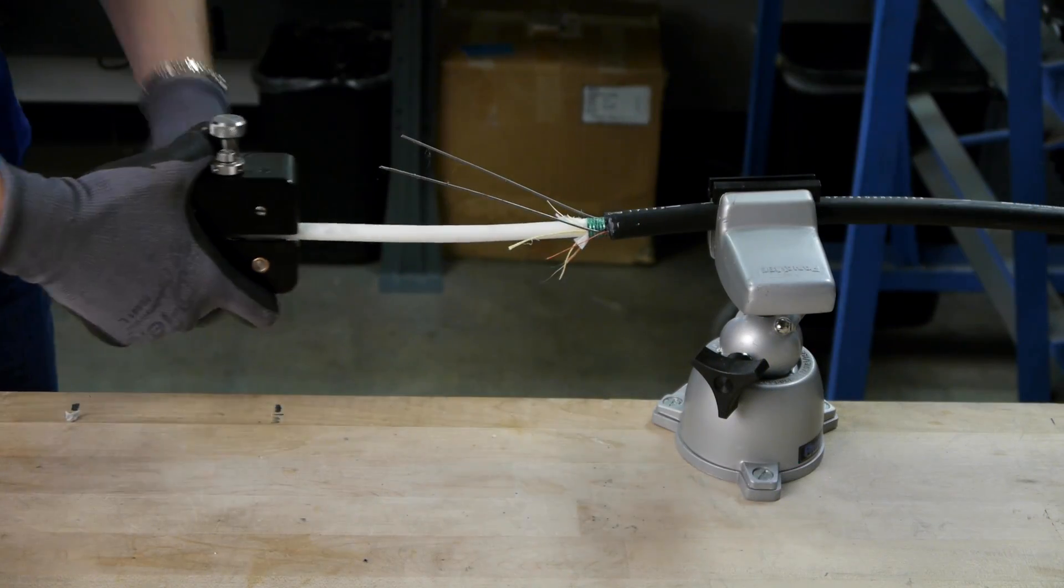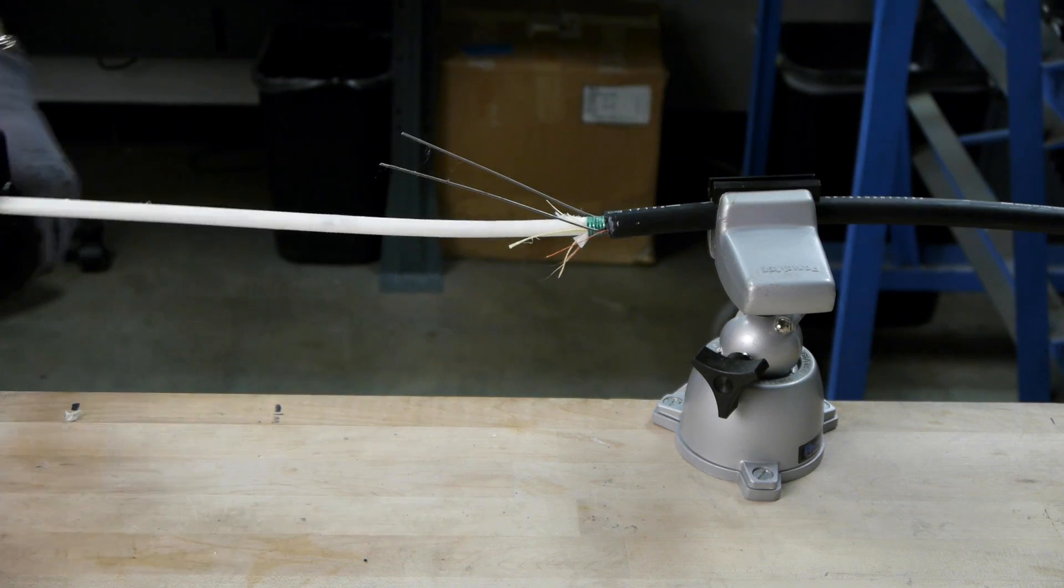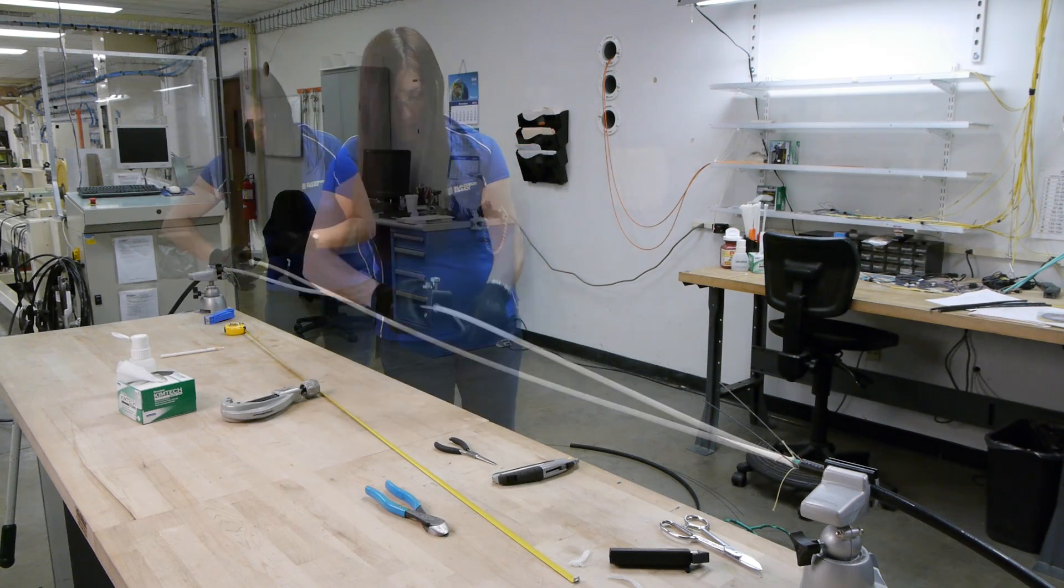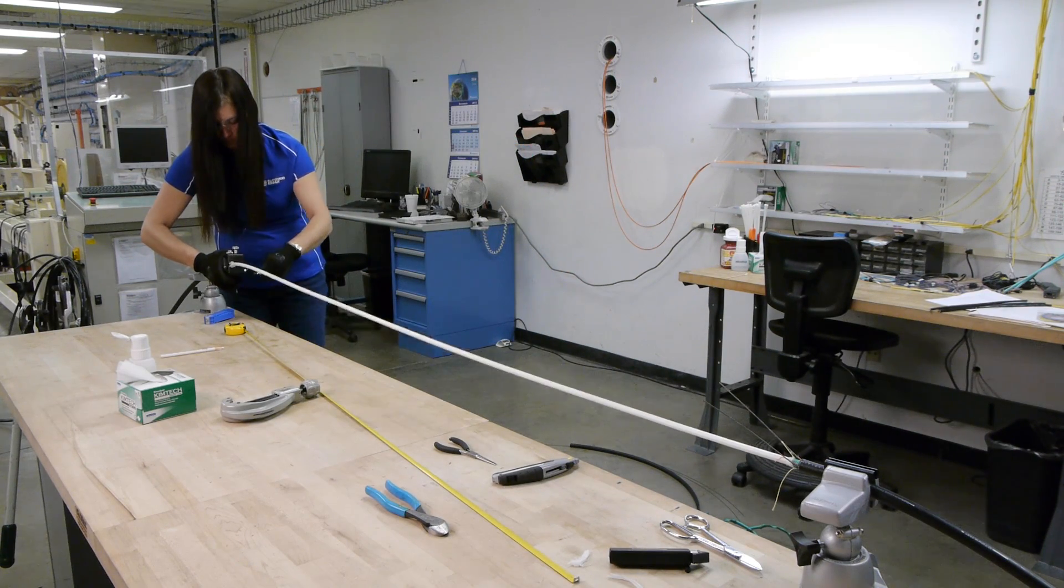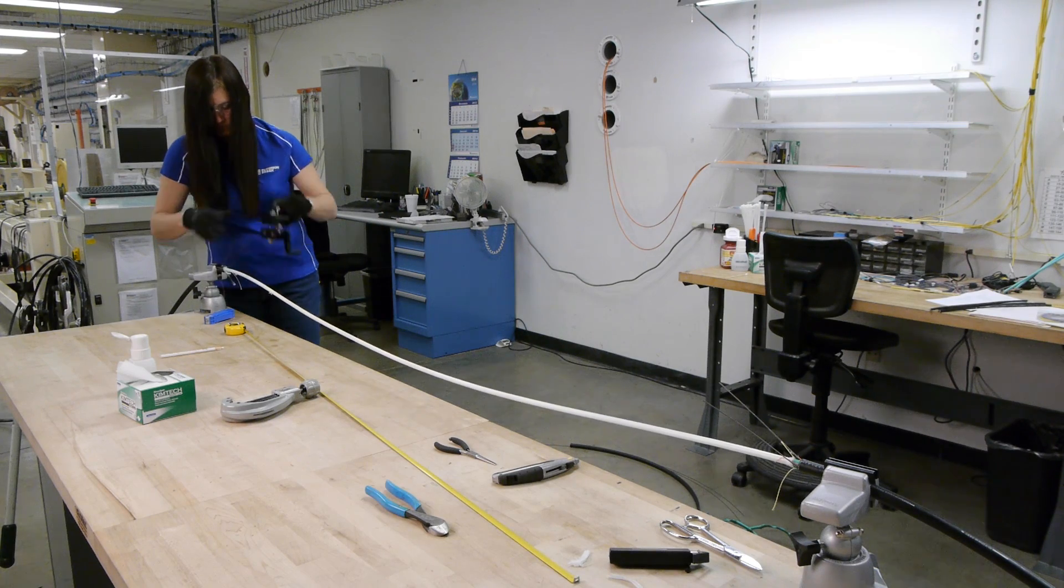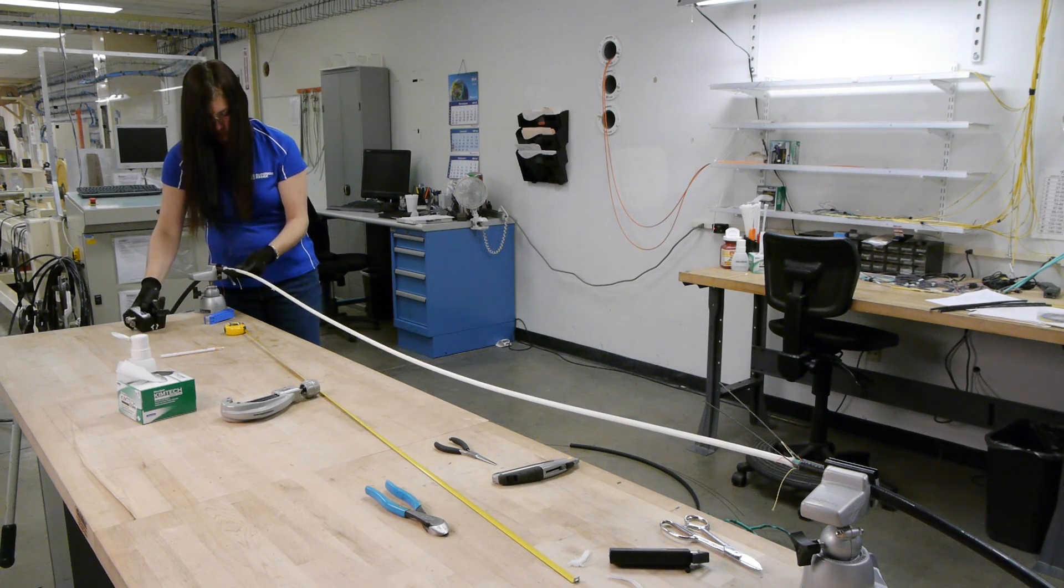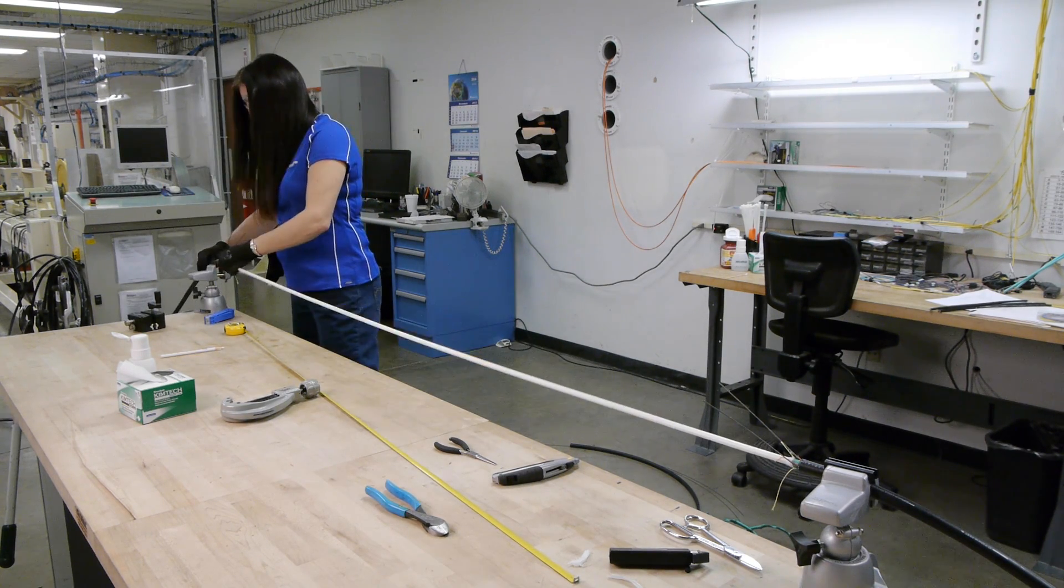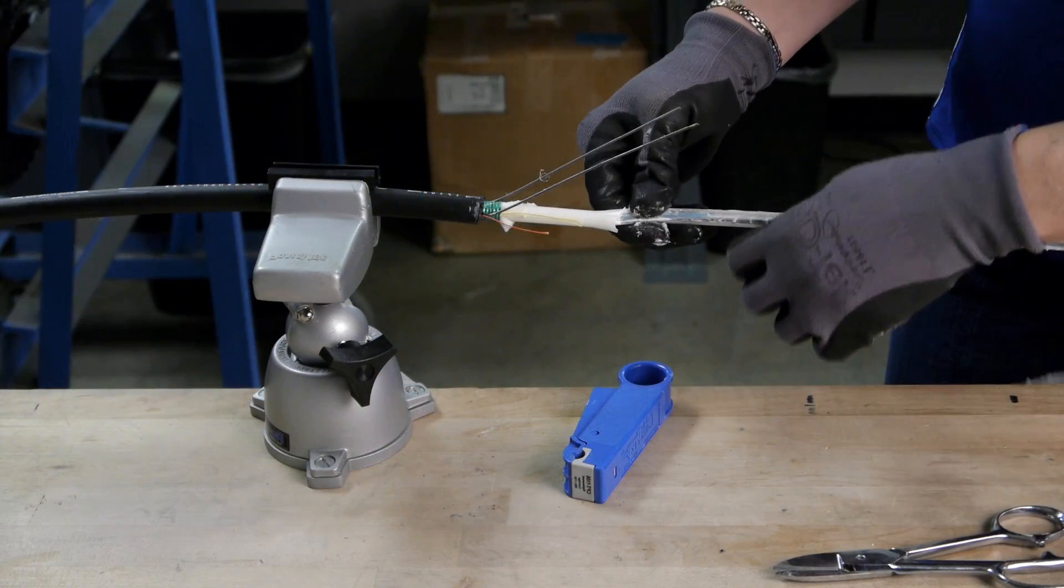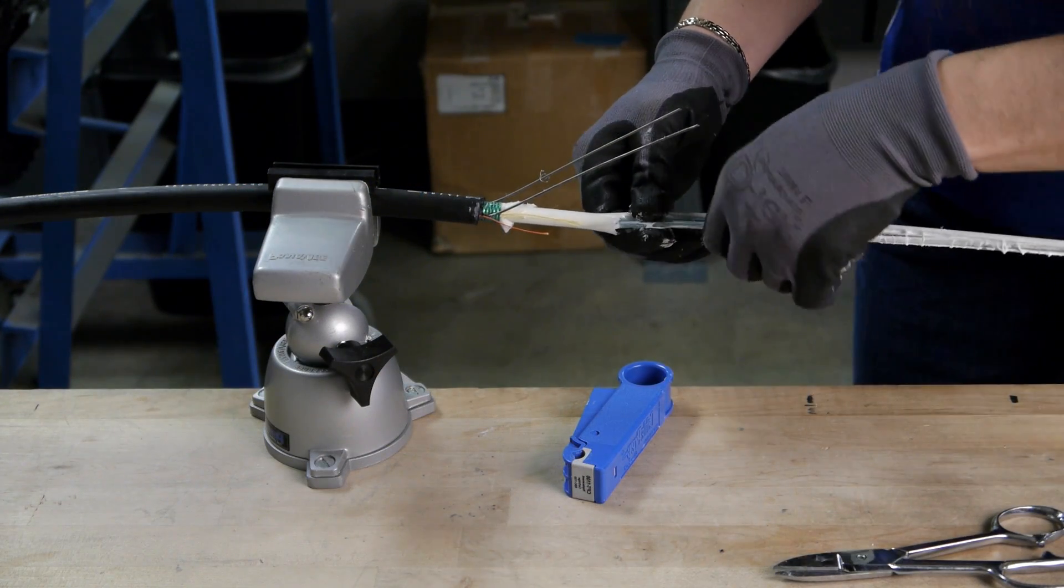Score central tube with tube splitter tool. Flex tube slightly. Carefully remove tubing.